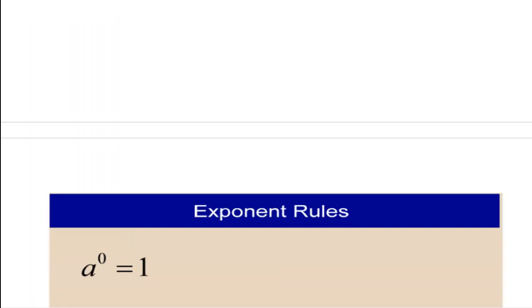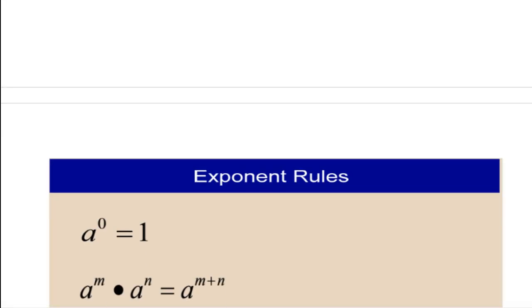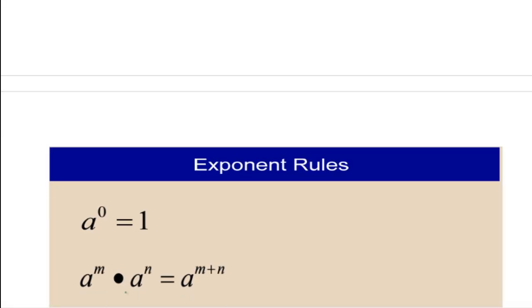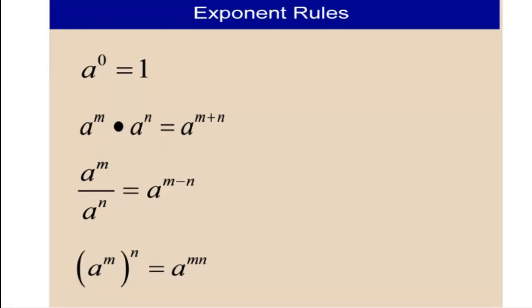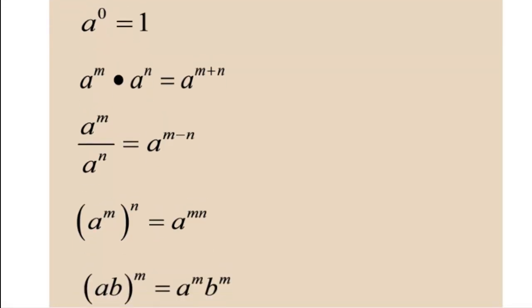First, anything to the zero power is 1. Whenever you multiply same bases, you add the exponents. Whenever you divide same bases, you subtract the exponents. Whenever you raise a power to another power, you multiply the exponents. If you have an exponent outside of parentheses and there are multiple bases within the parentheses, you distribute the exponent to each of the bases.